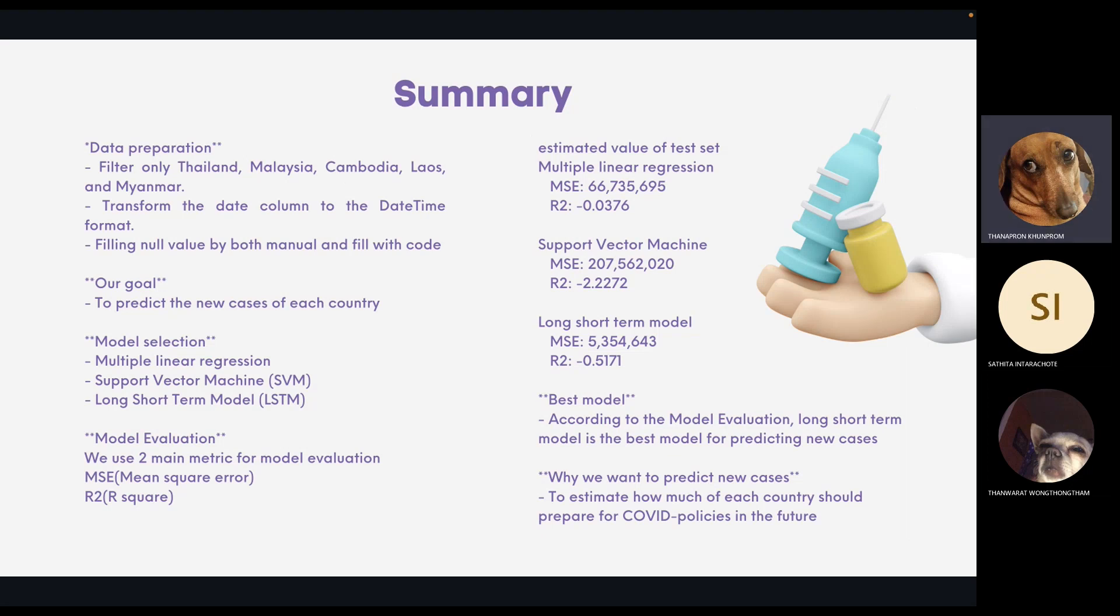For data preparation, we filter only Thailand, Malaysia, Cambodia, Laos, and Myanmar, and then transform the column to the time format, filling out values by both manual and filled with the codes. And to predict the new cases of each country, that is our goal. For the model selection, we use multiple linear regression, support vector machine, long short-term models.